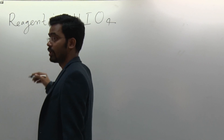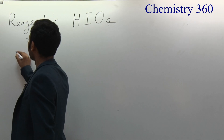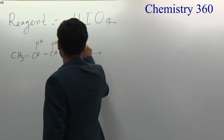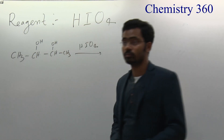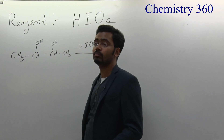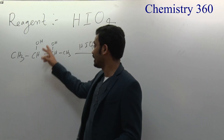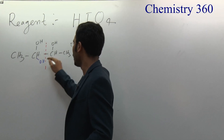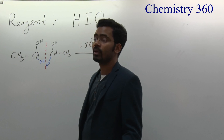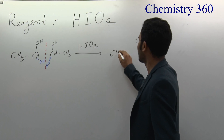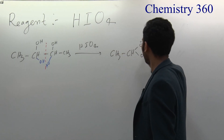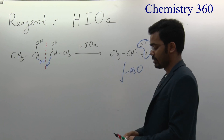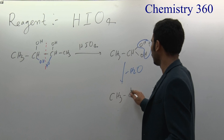Consider the reaction of CH3-CHOH-CHOH-CH3 with HIO4. HIO4 will break the carbon-carbon bond between the two carbons bearing OH groups. One OH will attach to each carbon, giving CH3-CH(OH)(OH) on both sides. Each geminal diol then loses water to form CH3-C double bond O — that is, acetaldehyde.